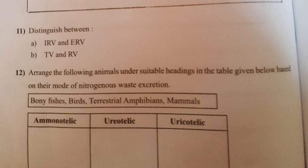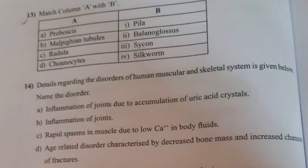Question 12: Arrange the following animals under suitable headings based on their mode of nitrogenous waste excretion — bony fishes, birds, terrestrial amphibians, mammals. Categories: Ammonotelic, Urotelic, Uricotelic. Answer: Ammonotelic — bony fishes; Urotelic — mammals, terrestrial amphibians; Uricotelic — birds.